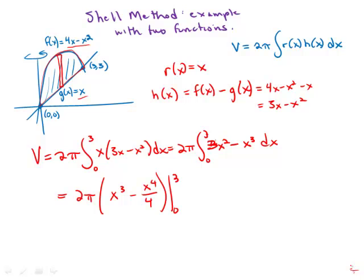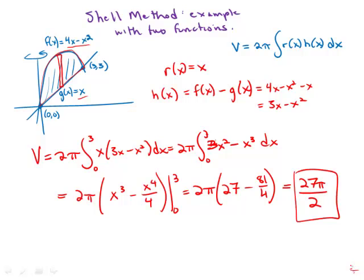Evaluated at 0 and 3. We get 2 pi times 27, which is 3 to the third, minus 81 over 4. 81 is 3 to the fourth. And all that minus 0. And this simplifies, after subtracting and multiplying by 2 pi, this simplifies to 27 pi over 2. And this is the volume.